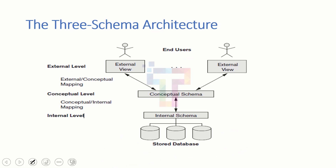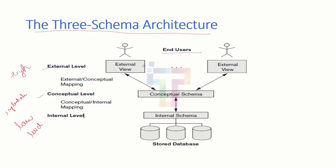Next we have three-schema architecture — it is very important from an exam point of view. We have the external level, conceptual level, and internal level. External level comes under end users — how the data will be shown to end users. Conceptual level resides between external and internal. External is related to the high-level data model, internal is related to the low-level data model, and conceptual is similar to the representational model. So external is similar to high level, internal is similar to low level, and conceptual is similar to the representational model.